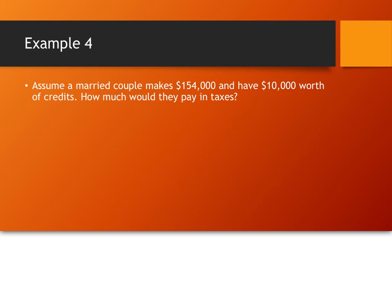So, I want you to do this. I want you to, again, push pause on the video. Calculate how much a married couple, if they were filing jointly, would have to pay in taxes if they started with $154,000 worth of income and had $10,000 worth of tax credits.